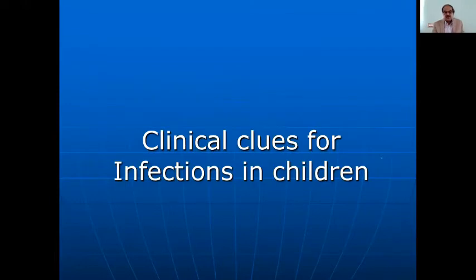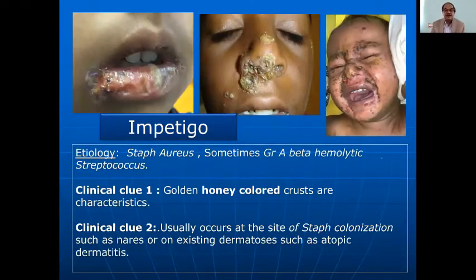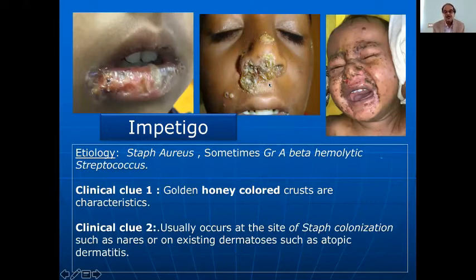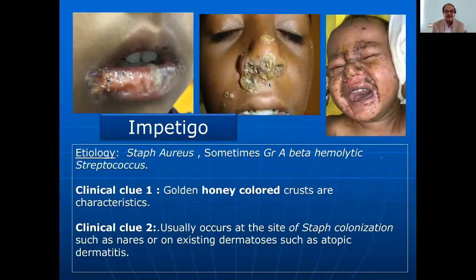There are certain clues for infections in children. The commonest would be impetigo — the most important clinical clue is golden, honey-colored crusts, which are characteristic. Another clue is that it usually occurs at sites of staphylococcal colonization such as the nose, or at existing dermatoses like atopic dermatitis colonized by Staphylococcus.